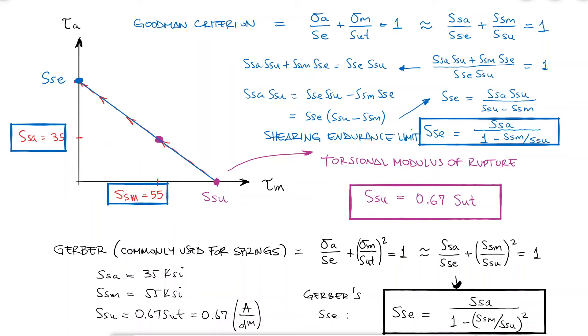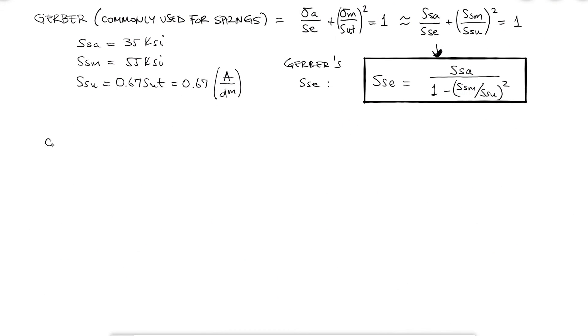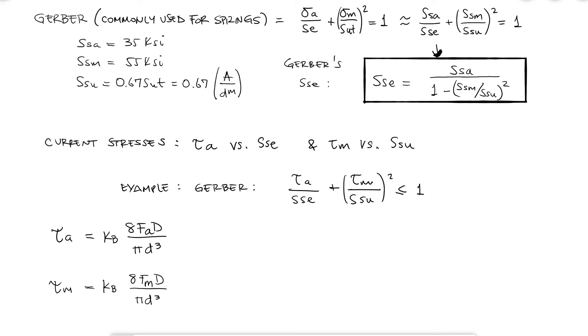With the SSE and SSU information, you would just use whatever specific criterion's equation you're using to compare your actual shearing stress values, tau_A and tau_M, against SSE and SSU respectively. The alternating shearing stress, tau_A would be given by the spring stress equation using the alternating compressing force F_A, and the mean shearing stress, tau_M would be given by the spring stress equation using the mean compressing force F_M, where F_A is the amplitude of the force and F_M is the average or mean force.